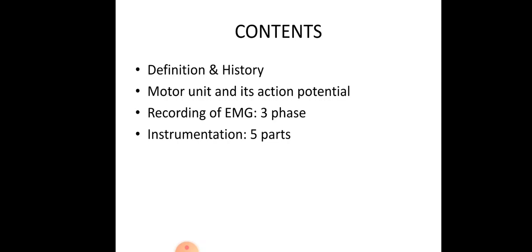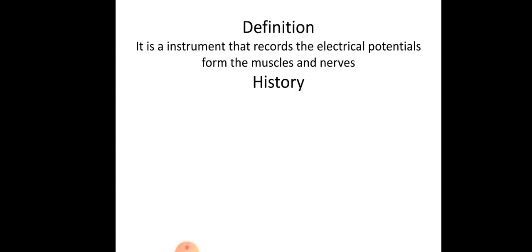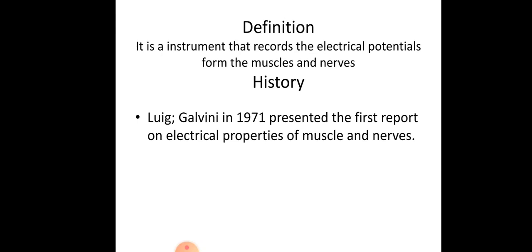When we talk about EMG, the first person who demonstrated it with an external instrument was Louis Galvani in the year 1791. The definition of electromyography is an instrument that records the electrical potential from the muscles and nerves. Galvani presented the first report on electrical properties of muscles and nerves.